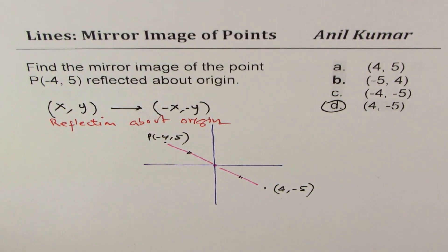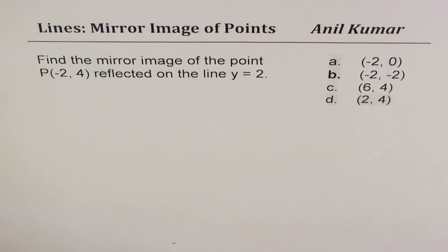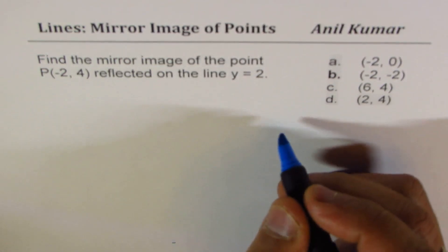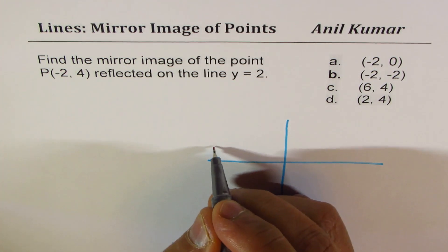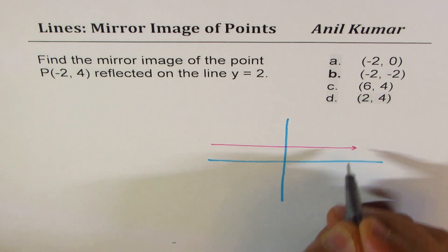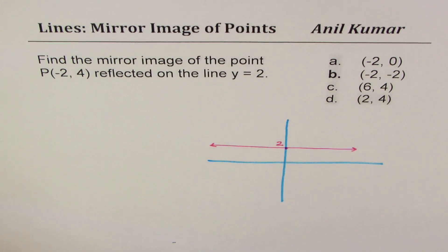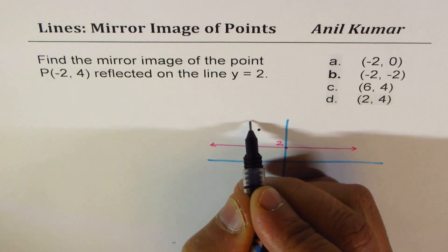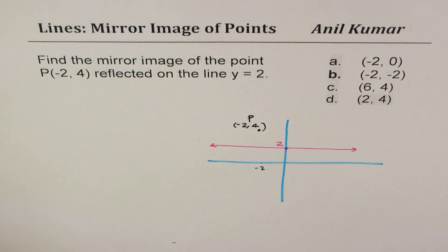Now I'm going to extend this to lines which are parallel to the x and y axes. We'll find the mirror image of point P (-2, 4) reflected on the line y = 2. On a coordinate plane, y = 2 is a horizontal line — y being constant — where at each point the value of y is 2. We are given point P which is (-2, 4), and we have to reflect it on this particular line.